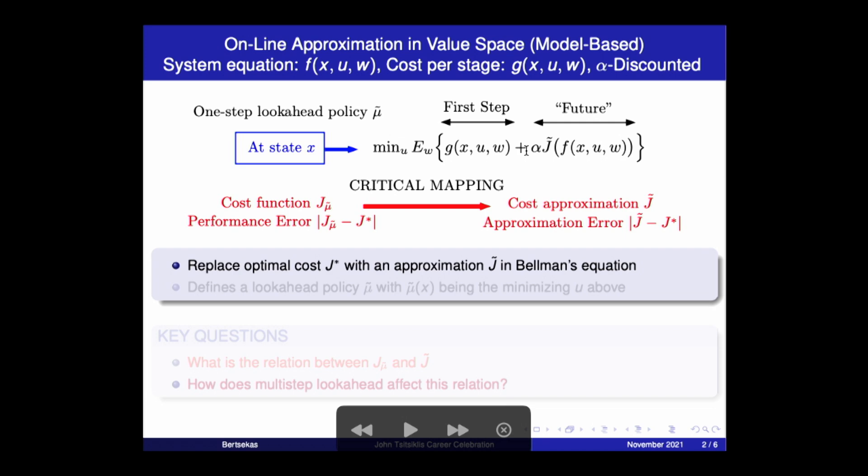We replace the optimal cost function in Bellman's equation with some approximation. That's what's called approximation in value space. We approximate J-star, the value function, with a J tilde. And we minimize like we would in dynamic programming, exact dynamic programming, except with this approximation J tilde.